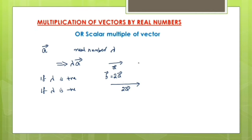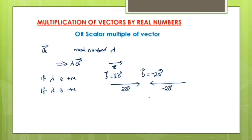Now imagine you are multiplying with minus 2. The real number is minus 2. We will be getting a new vector b, where b vector equals minus 2 times vector a. In this case, the new vector has the same magnitude as 2a but its direction is opposite to that of vector a, giving us minus 2a. If the real number is positive, the new vector is in the direction of the given vector; if negative, the direction is opposite.